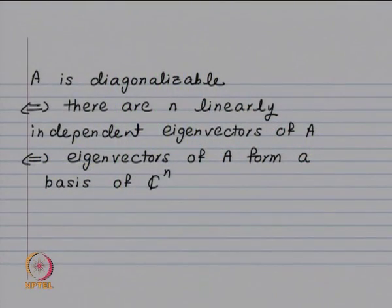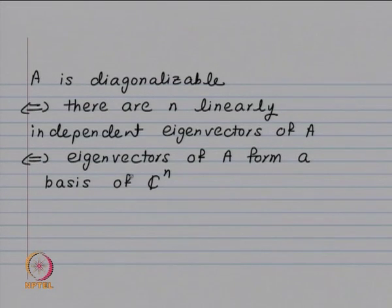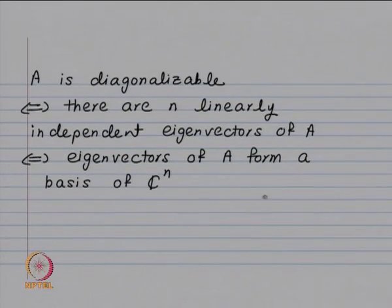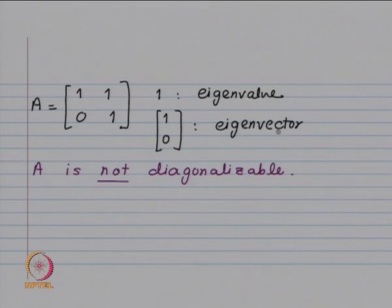A matrix A is diagonalizable if and only if there are n linearly independent eigenvectors of A, which will form a basis of C^n. The example A = [[1,1],[0,1]]: the only eigenvalue is 1, and [1, 0] or any non-zero multiple is the only eigenvector. Such a matrix is not diagonalizable.